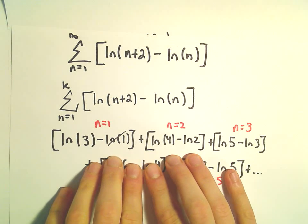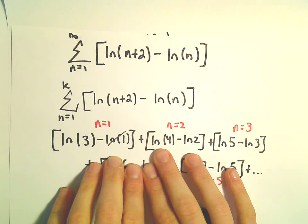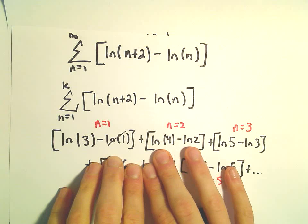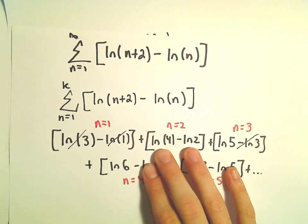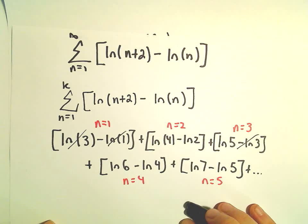But if we summed up the first three terms, it looks like the ln of 4 is going to be left over. We've got negative ln of 2. It looks like the ln of 3 and the negative ln of 3 would cancel out. So we would be left with ln of 4 minus ln of 2 plus ln of 5.